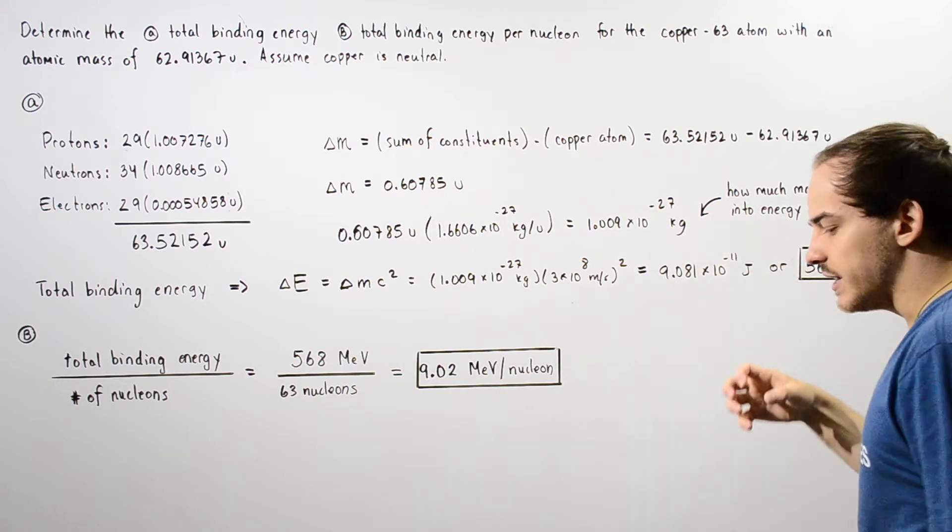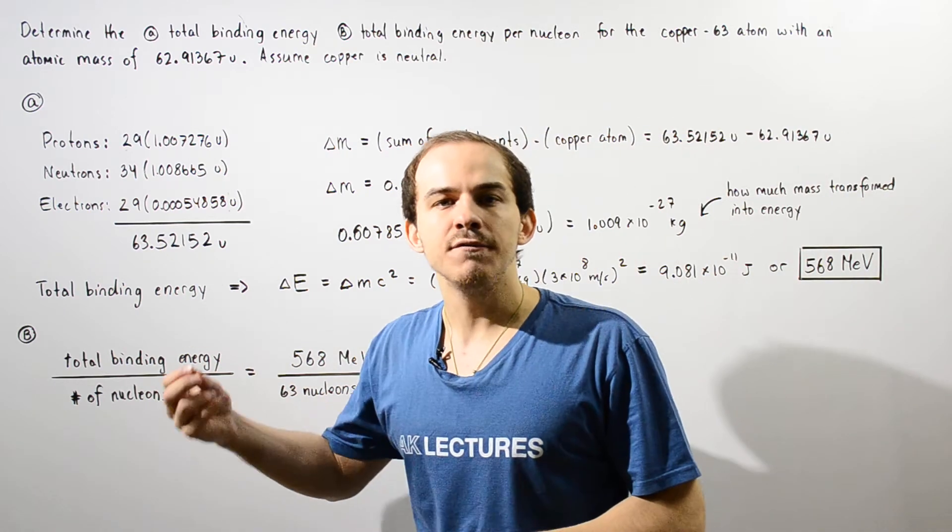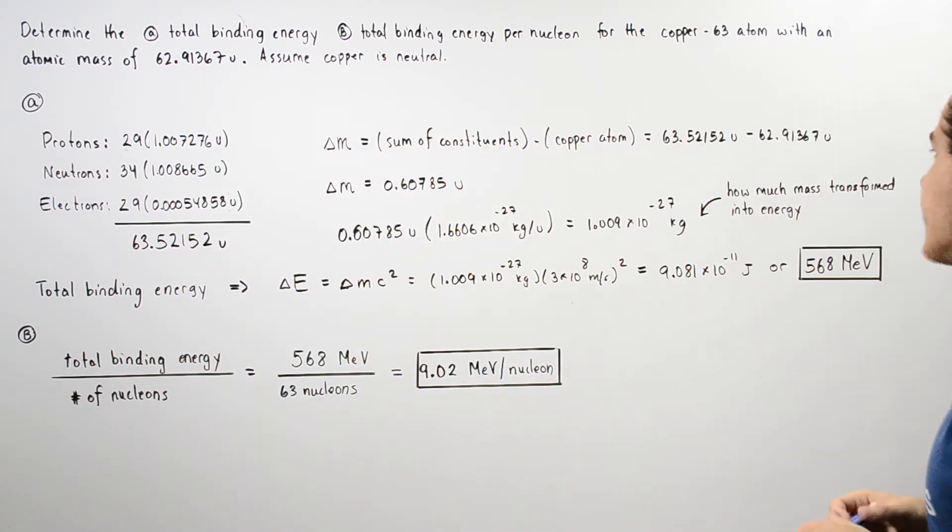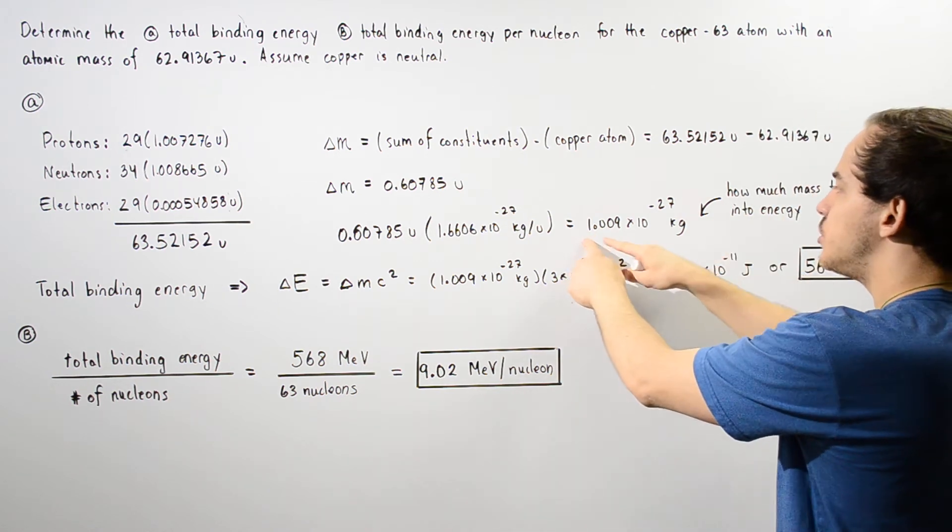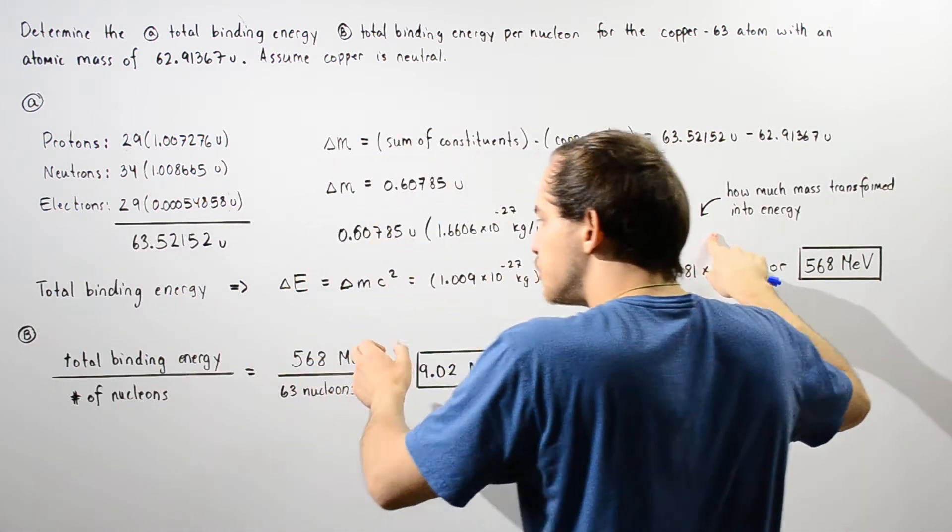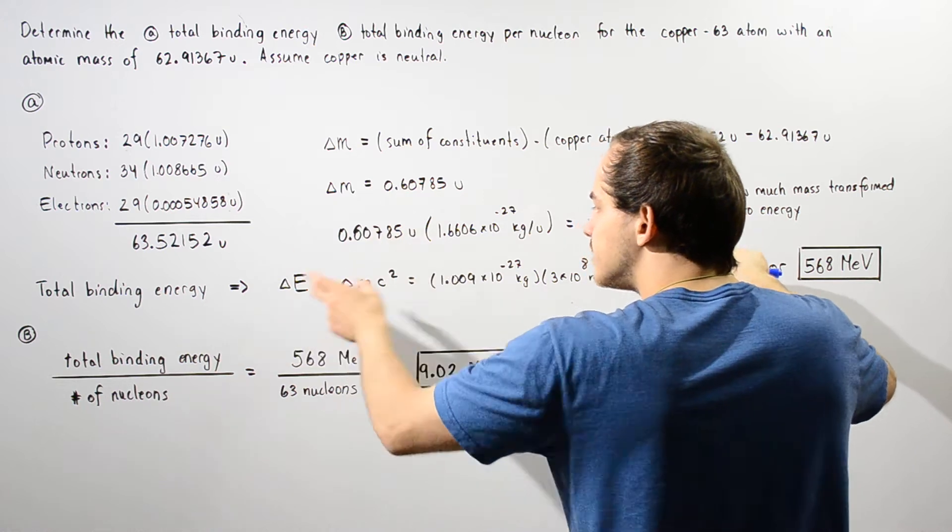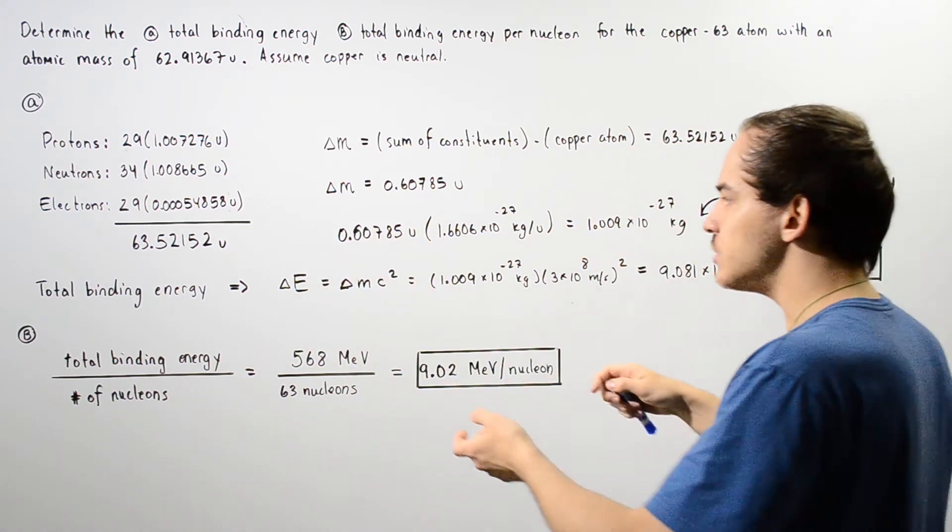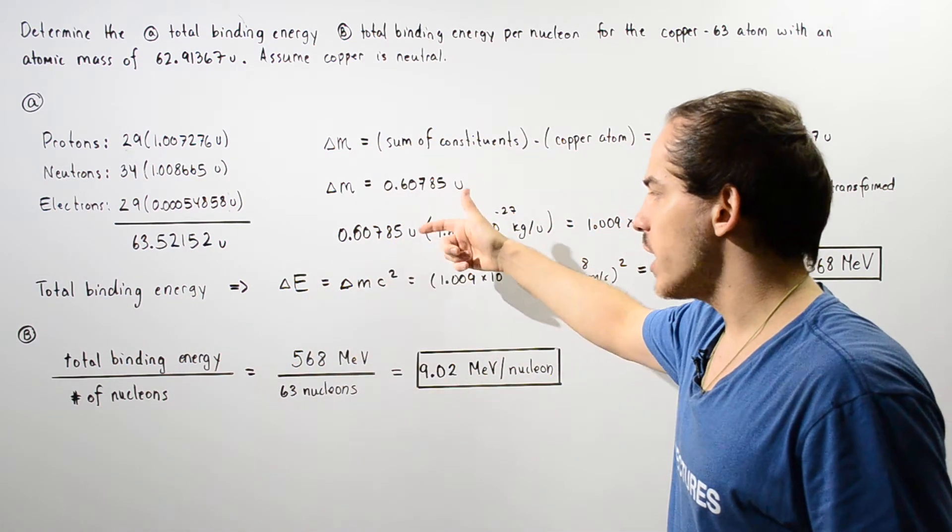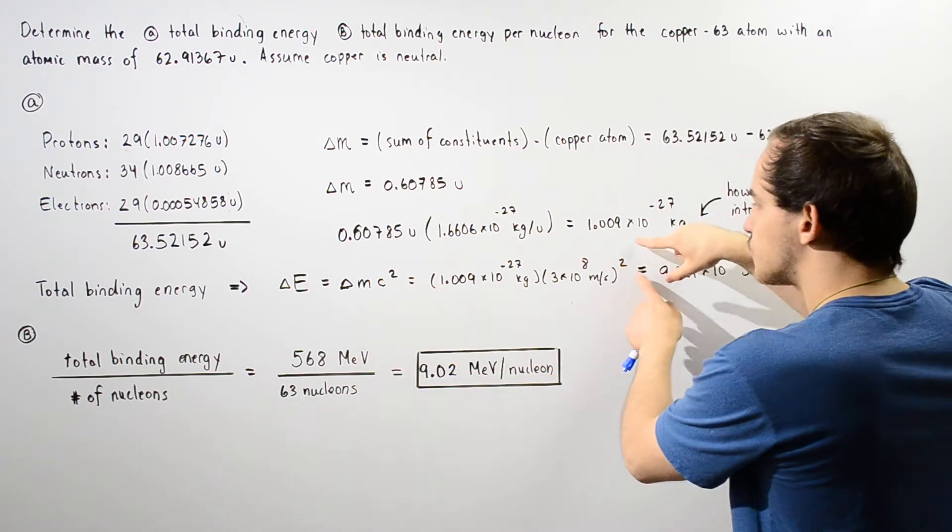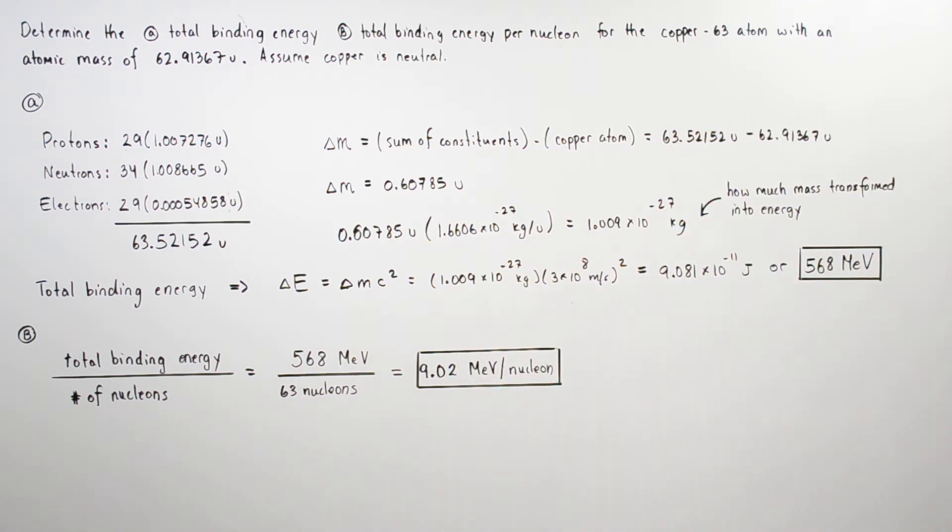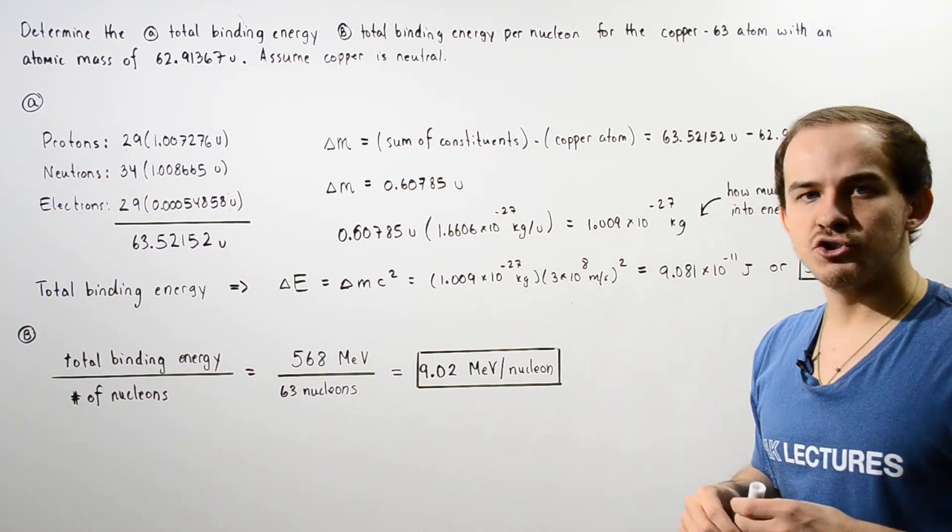This is basically how much mass was released in the form of energy when these constituents came together to form our single copper atom. To calculate how much energy this change in mass actually corresponds to, which is given by the total binding energy, we use this equation, which is basically the rest mass energy. The change in energy is equal to the change in mass multiplied by the square of the speed of light in a vacuum. We plug in our constant squared, multiply that by the change in mass in kilograms, and we get about 9.081 times 10 to the negative 11 joules of energy.